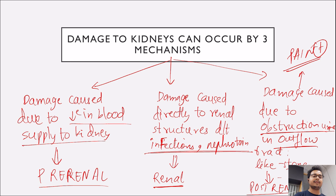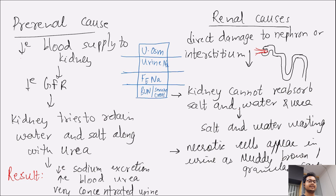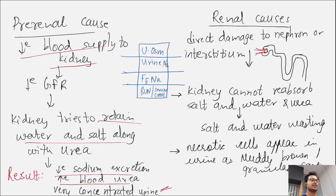The main difficulty in our exams comes between pre-renal and renal causes. To differentiate these, let us first understand the mechanism. In pre-renal, there is decrease in blood supply to the kidneys, so the kidney tries to retain more salt, water, and urea. So ultimately urine sodium decreases, blood urea increases, urine concentration is high, and the patient excretes highly concentrated urine.